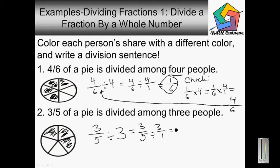3 divided by 3 is 1, and 5 divided by 1 is 5. So we could check the answer.